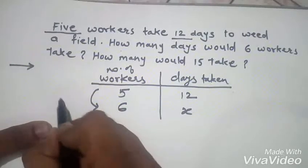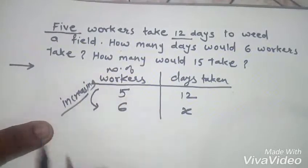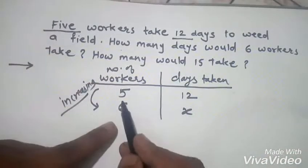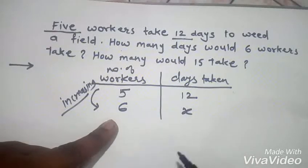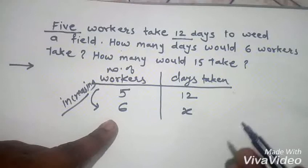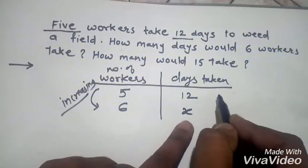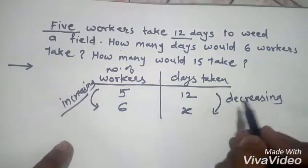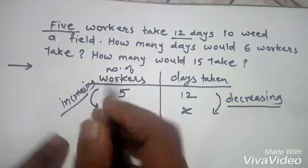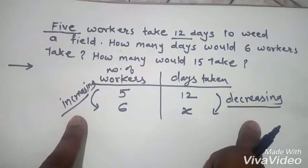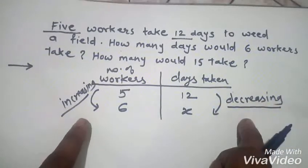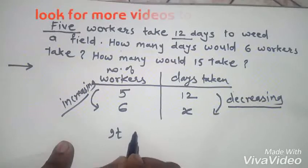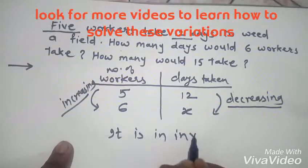The change in number of workers is increasing. Now think: if 5 workers finish the work in 12 days, then with more workers the work will be finished in less time — so the number of days is decreasing. The change in workers is increasing but the change in days is decreasing, meaning the changes are opposite in nature. If changes are opposite, it is inverse variation.